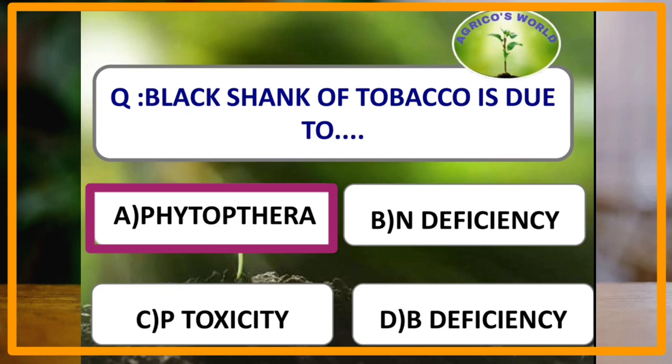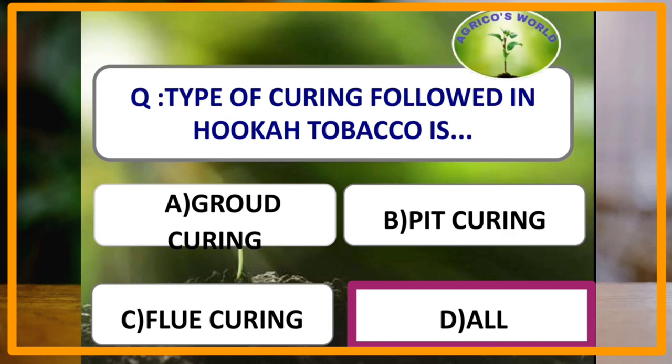Types of curing followed in hookah tobacco are ground curing, flue curing, and flue curing — all three types of curing are found in hookah tobacco. Thank you, please like, share, and subscribe to our channel Agricose World.